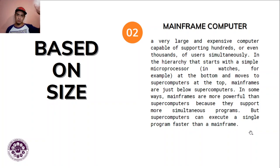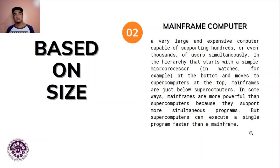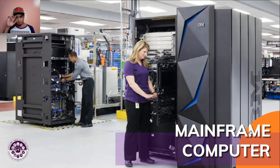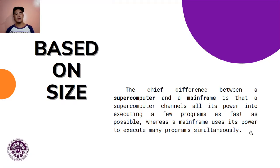Mainframe computers are more powerful than supercomputers in that they support more simultaneous programs, but supercomputers can execute a single program faster than a mainframe. They have different functionality. The chief difference: a supercomputer channels all its power into executing a few programs as fast as possible, whereas a mainframe uses its power to execute many programs simultaneously. Examples include database servers that support users all over the globe simultaneously.